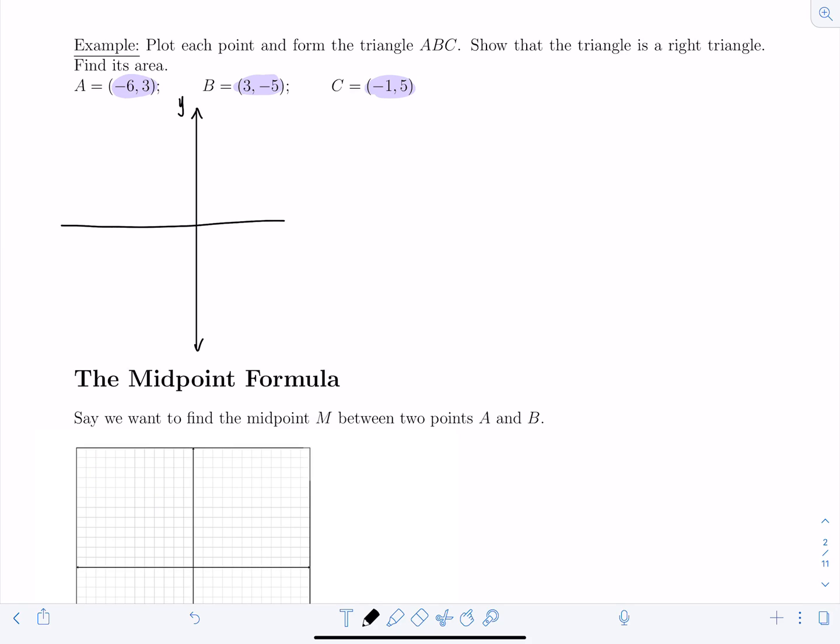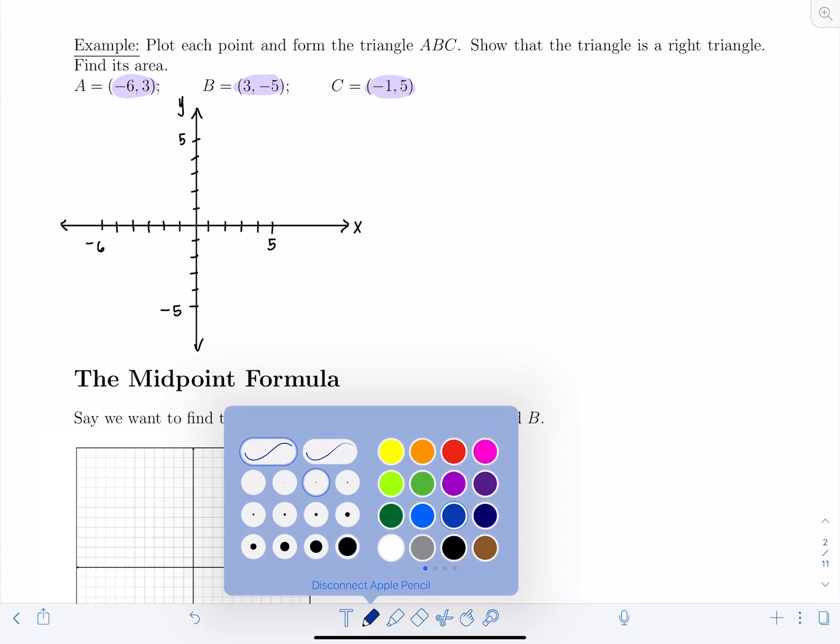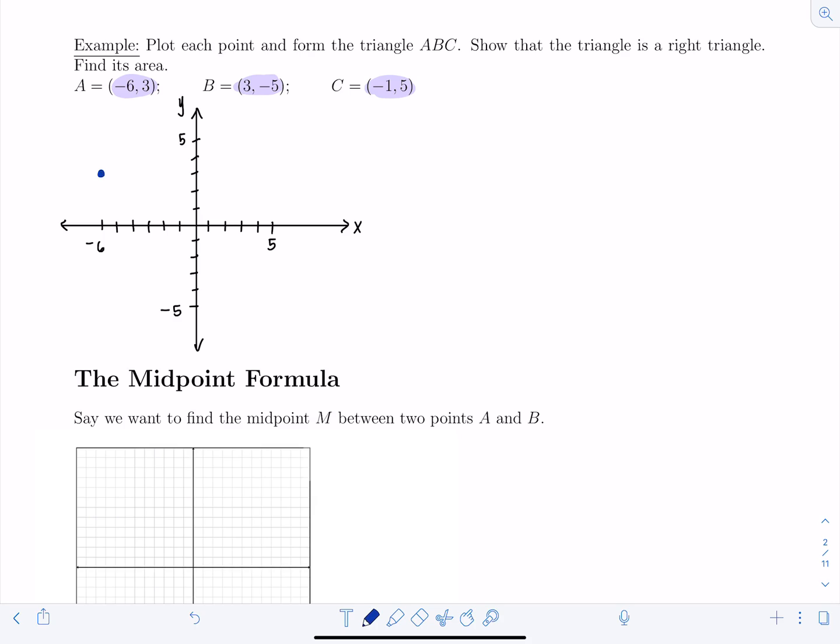Okay, here's the x-axis. So we have 1, 2, 3, 4, 5, 6. 1, 2, 3, 4, 5, and then I'll go 5 in the y direction. 1, 2, 3, 4, 5. Okay good. So let's see. Point A has coordinates (-6, 3). That is right here. Point B has coordinates (3, -5). That would be here. And C has coordinates (-1, 5). Here's C. So let's connect all three points, form the triangle.